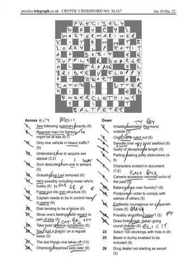23 down, Select, 100 Stockings with Hole in, so 100 in Roman numerals is C, Stockings can be Hose, can't it, Panty Hose, whatever, and with a Hole, put another O in, gives us Choose for Select.